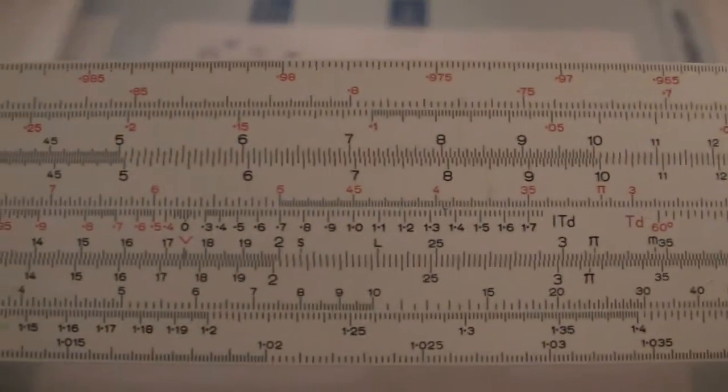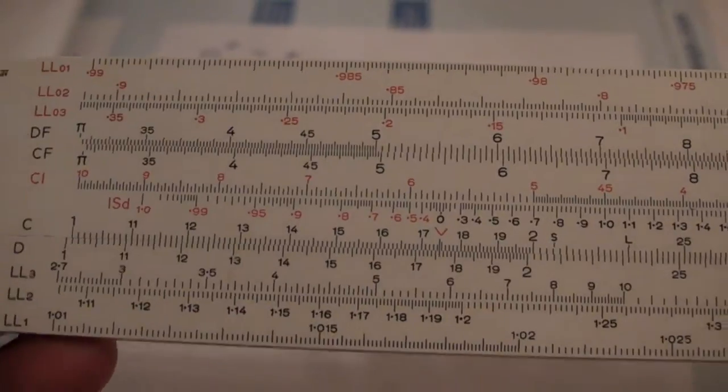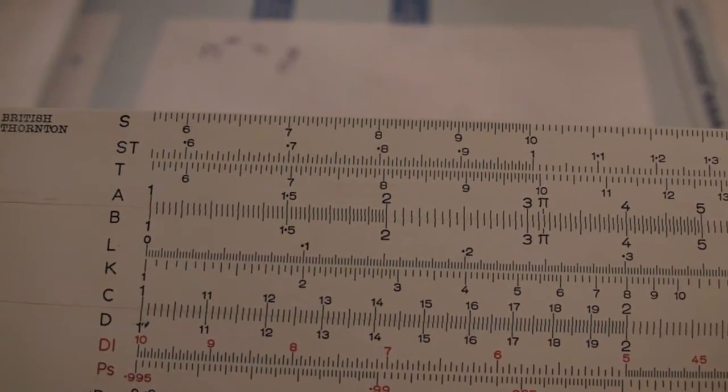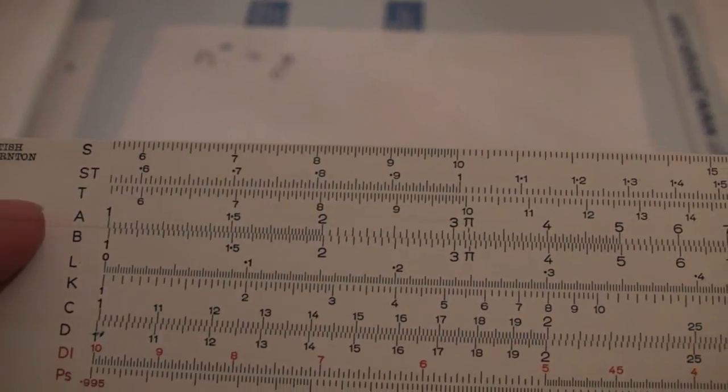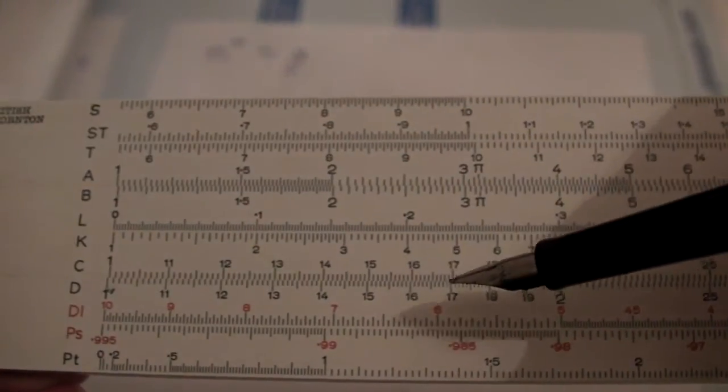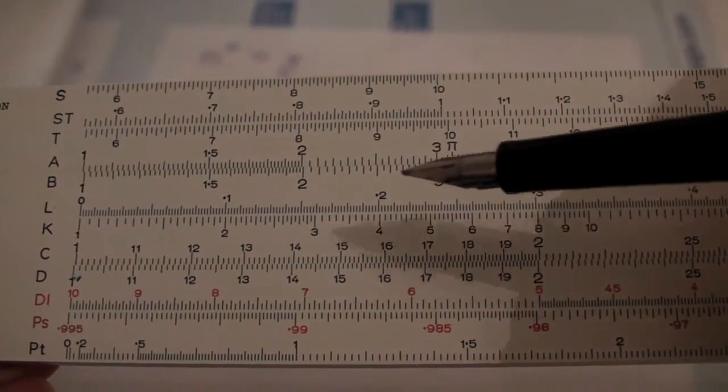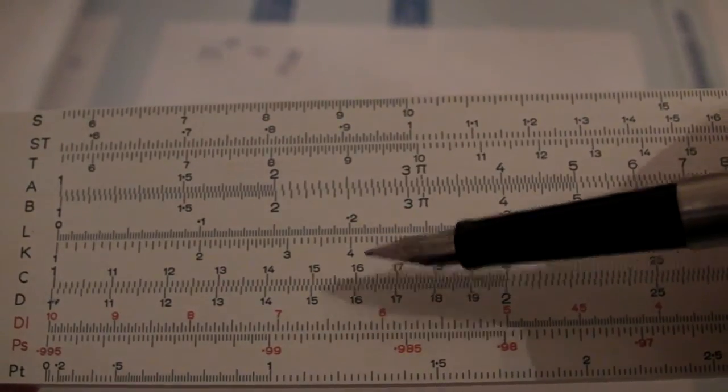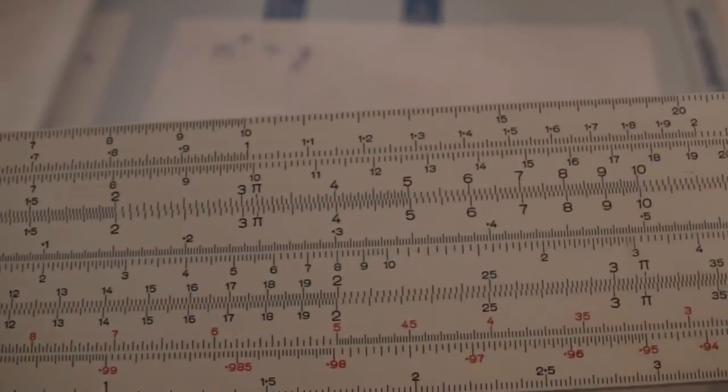So, if we wanted to work out 4 squared, or even 4 cubed, we've got the ability to easily do that with the A and B scales, which are the square of everything that appears on C and D. Or for cubes, we've got the K scale, which is C and D cubed.